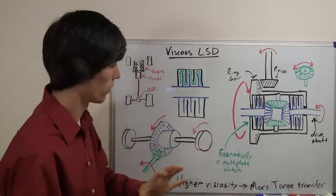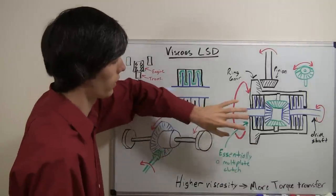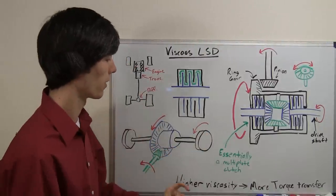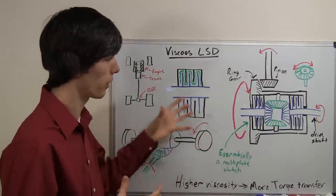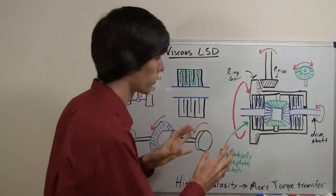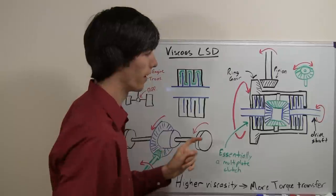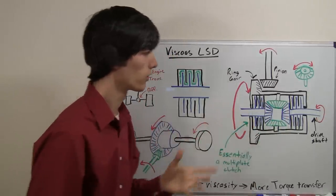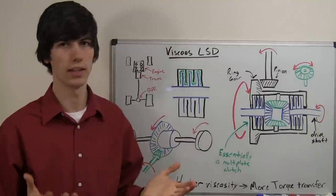So you can understand that if you have a thicker liquid in here, one that's very difficult to turn through, then you're going to have more torque transfer because you're basically going to be locking it up. Take it to two extremes to make it kind of clear. So if there was just air in there and you spin this thing, air isn't going to be able to turn this. So it's basically an open differential.